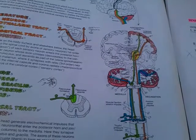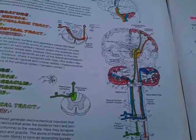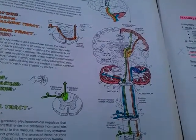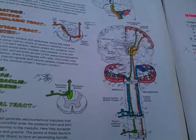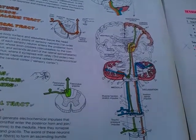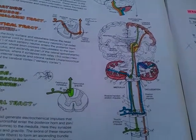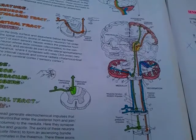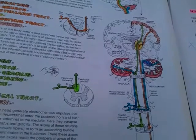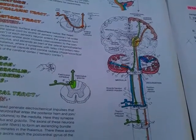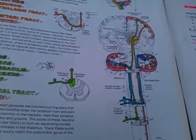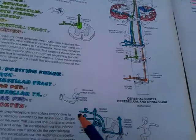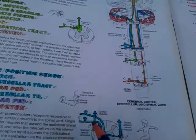This question will be about the tracts for general sensations. They convey impulses arising in the extero-receptors in the skin, from intero-receptors from inner organs and vessels, and from proprio-receptors from the muscles and joints.